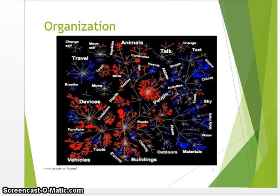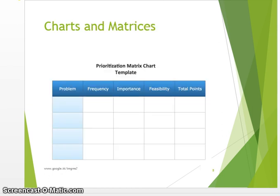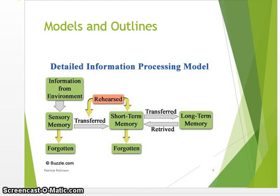Other ways that we can organize: creating charts and matrices. So when you're studying, make charts, make matrices. Don't only use little scrappy notes — remember the problem with scrappy notes according to Baddeley's theory. Make models and outlines; we are dealing with information processing. Make a model, make an outline, so that we get visual information along with the verbals.